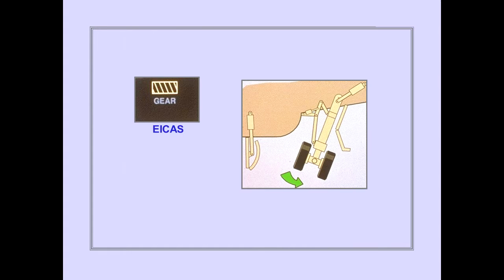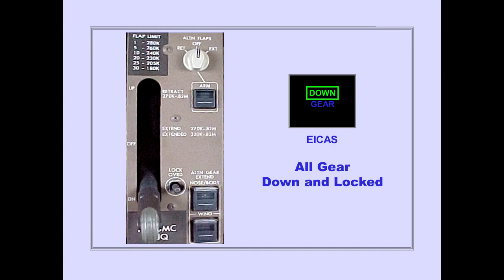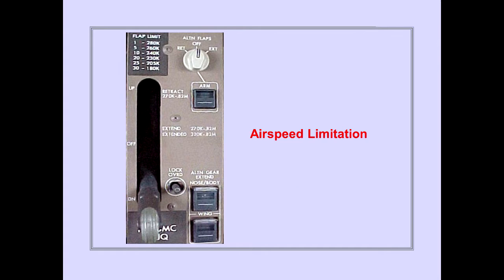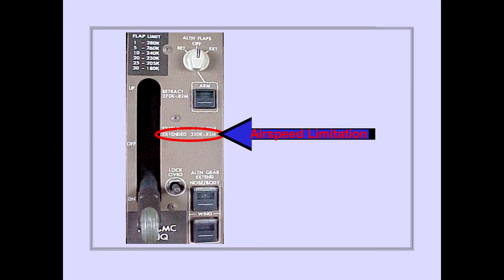The ICAS gear in transit indication is displayed while the gear move to the down and locked position. The ICAS gear down indication is displayed when all landing gear are down and locked. The ICAS airspeed limitation with the gear extended is 320 knots or 0.82 Mach. This airspeed limit prevents structural damage.